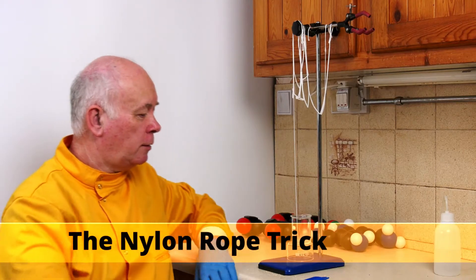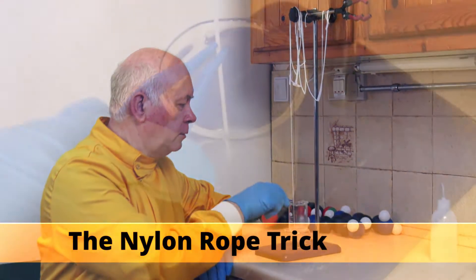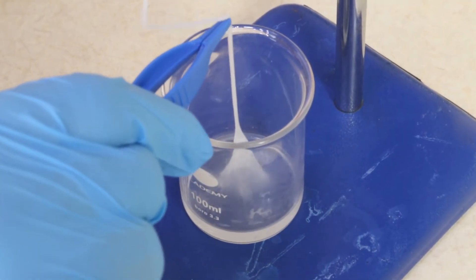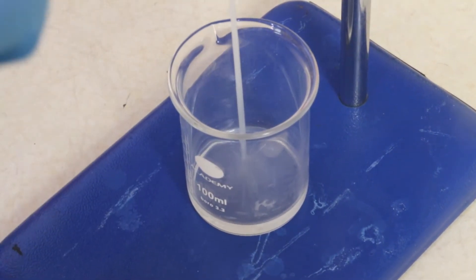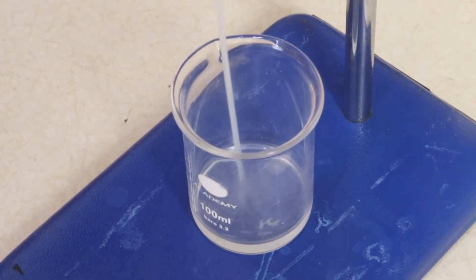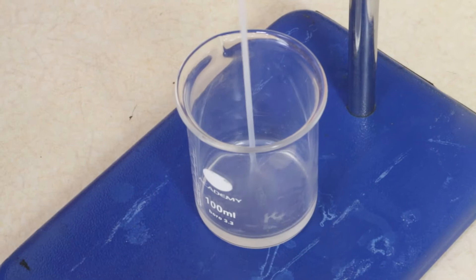This is the nylon rope trick. We've got two chemicals and when we grab hold of them, then magically they form nylon. Let's have a look and see how it works.